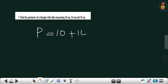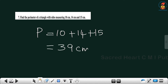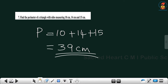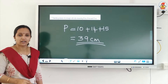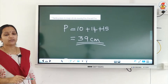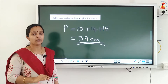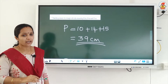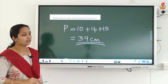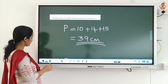So that means 10 plus 14 plus 15, which gives 39 centimeter. So if three sides are different in a triangle, the formula for finding the perimeter is the sum of the length of all three sides. I hope it is clear.